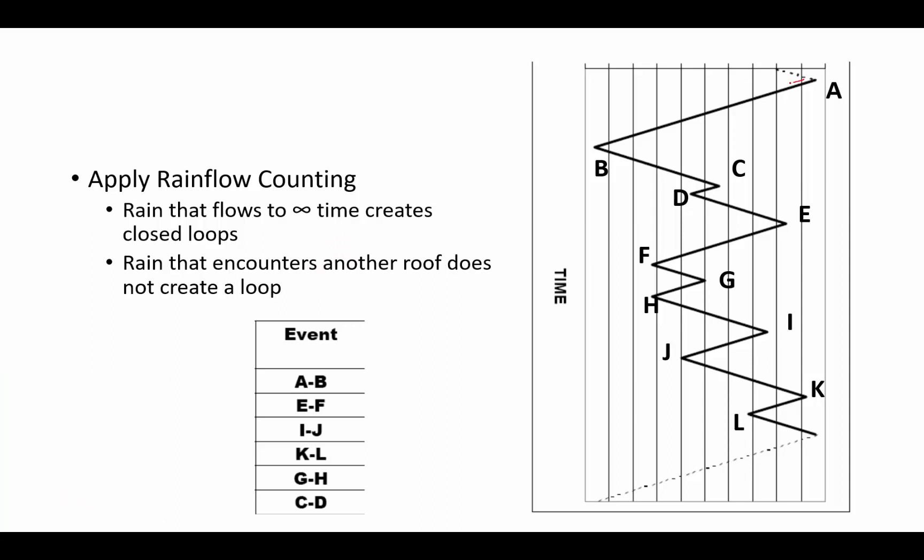So, for example, with A, we flow and the rain flows down and we go into infinite time, that's going to be a closed loop. Another example, say rain flows from B to C, it encounters another roof, it will not create a closed loop. Say from D to C, it encounters another roof, it will not create a closed loop. How about from D to E? Again, it encounters a roof. It does not create a closed loop.